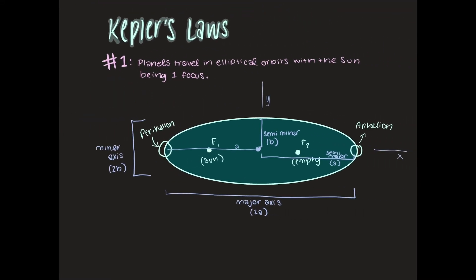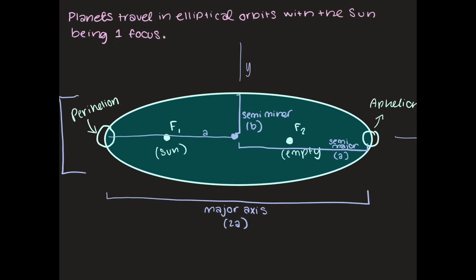There's another variable that we can define in this drawing which is c and c is the distance from the center of our ellipse to one of the foci. So if we use f2 right here and c is center to f2.